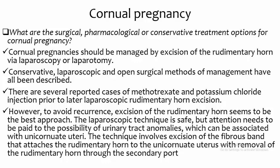Regarding cornual pregnancy management: the pregnancy should be managed by excision of the rudimentary horn via laparoscopy or laparotomy. Conservative laparoscopic and open surgery methods have all been described. There are several reported cases of methotrexate and potassium chloride injection prior to laparoscopic or rudimentary horn excision. However, to avoid recurrence, excision of the rudimentary horn seems to be the best approach. The laparoscopic technique is safe, but attention needs to be paid to the possibility of urinary tract abnormalities associated with the unicornuate uterus. The technique involves excision of the fibrous band attaching the rudimentary horn to the unicornuate uterus, with removal of the rudimentary horn through a secondary port.